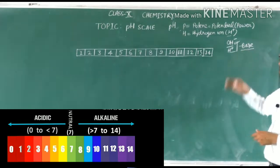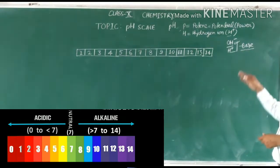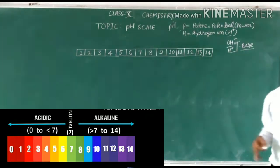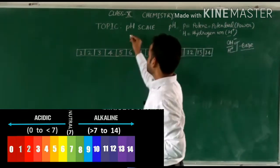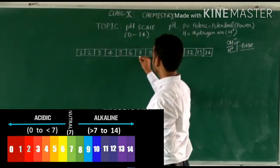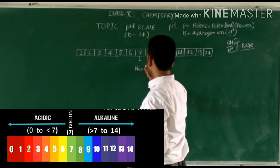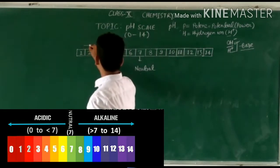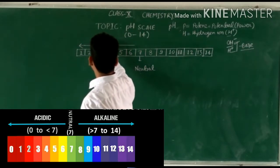In base, hydrogen ion is also present but it is very less in amount. That is how the pH scale can tell us about the strength of base as well as acid. This pH scale ranges from 0 to 14, where 7 is the neutral pH value. If the pH is less than 7, then it would be in the category of acid.